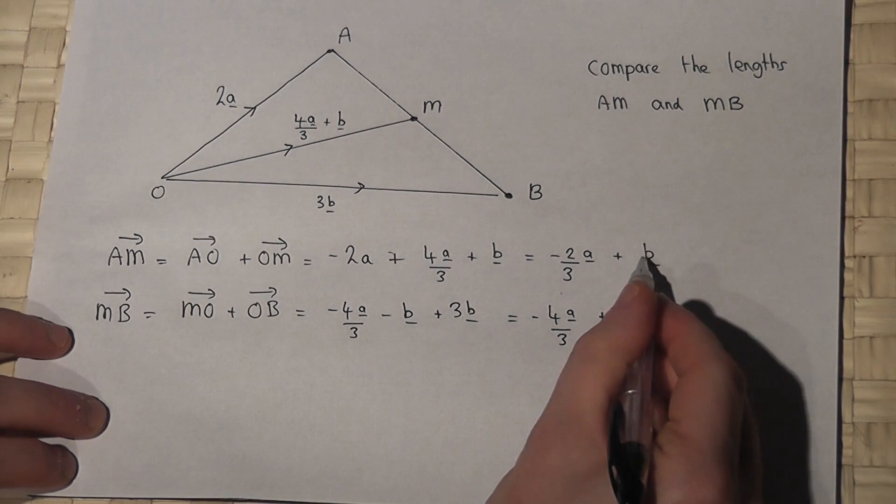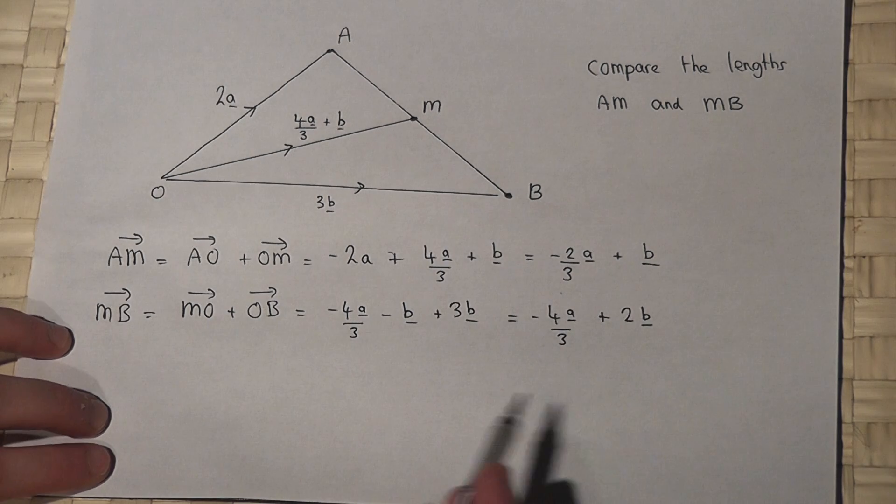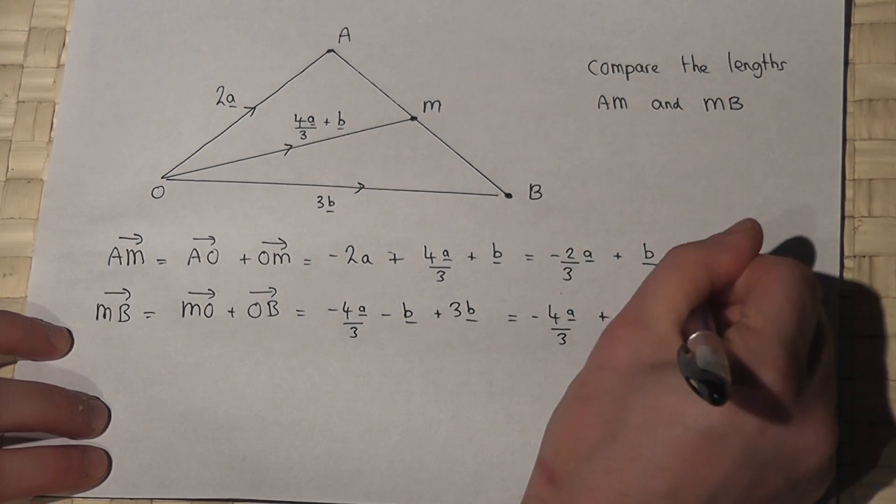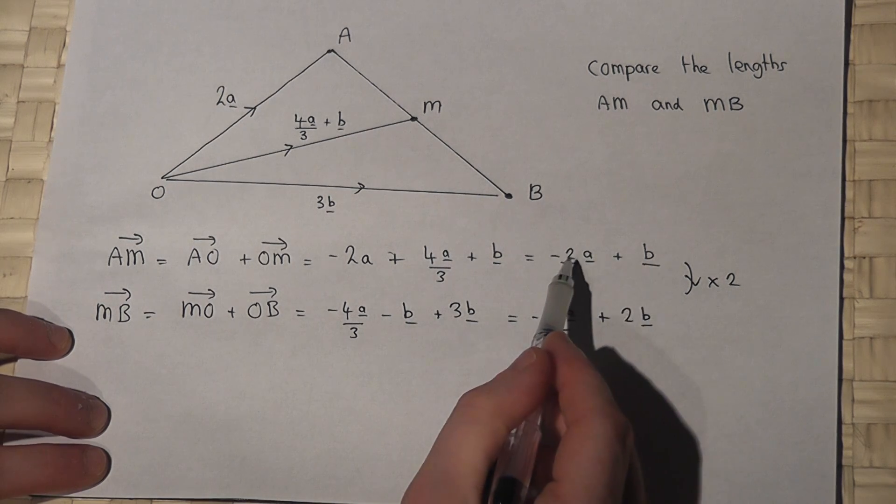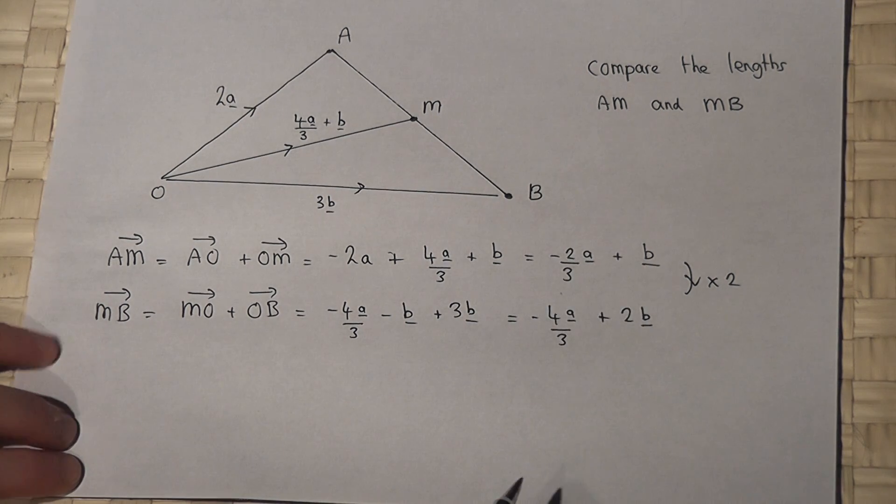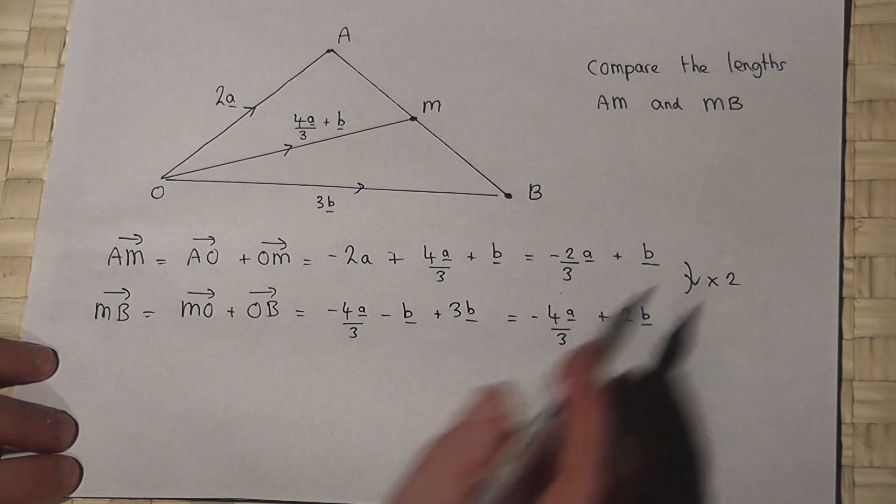And if you compare this vector here with this vector here, it is just times by 2. 2 times b is 2b. 2 times 2 thirds is 4 thirds. So this vector is twice that vector.